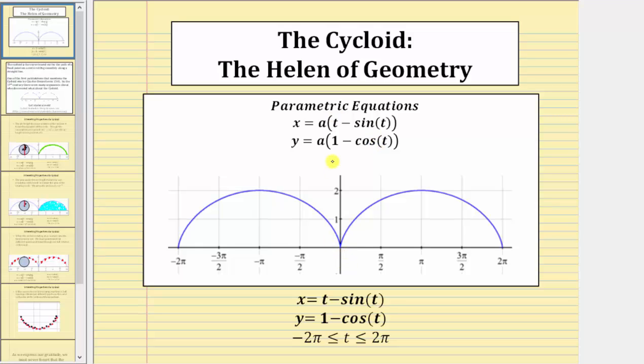For this particular graph, a equals one, and therefore, these are the parametric equations for this cycloid.